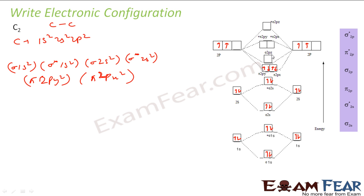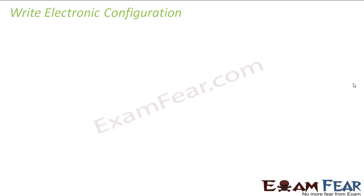The only thing is you should know the order. You should know the diagram, and then this is pretty simple. You have sigma 1s, then antibonding sigma 1s, sigma 2s, antibonding sigma 2s, pi 2p, sigma 2p, and so on.